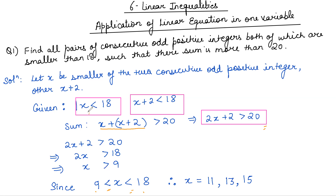Since x is an odd positive integer and the inequality is strict, 9 and 18 are not included. So the odd positive integers after 9 and before 18 are: 11, 13, 15, and 17. We can also consider keeping 17. So these are the possible values of x lying between 9 and 18.